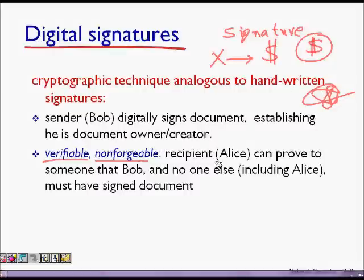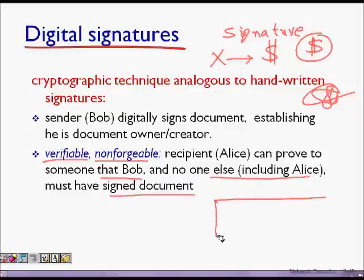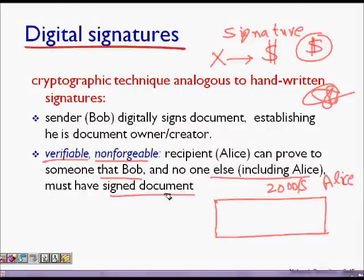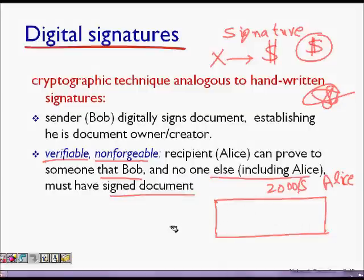The recipient Alice can prove to someone that Bob, and no one else, must have signed the document. For example, there is a check of twenty thousand dollars sent to Alice — Alice won a prize and Bob signed the check. Alice can prove to someone that this is a valid check which Bob has signed, and it should be non-forgeable so no one else can produce that signature.